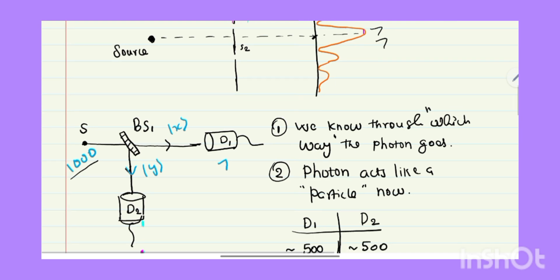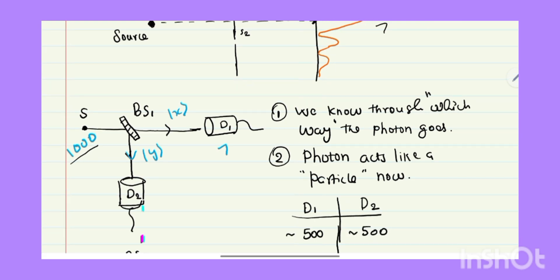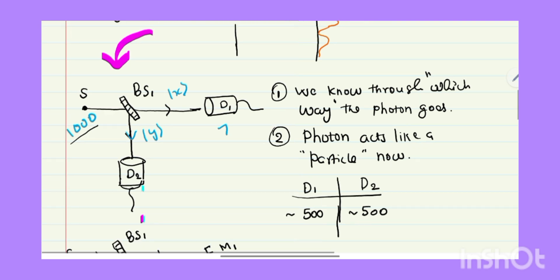The Mach-Zehnder interferometer is the simplest version of the double slit experiment. The experiment with a single beam splitter gives particle nature, since when D1 clicks we know it is a transmitted photon, and when D2 clicks we know it is a reflected photon. We know the path of the photon, and that's why we get particle nature.